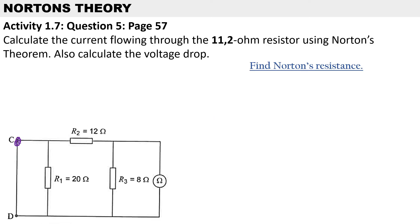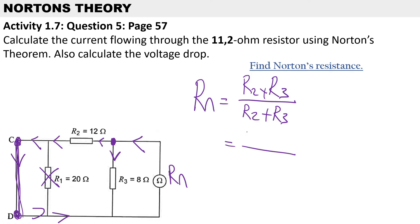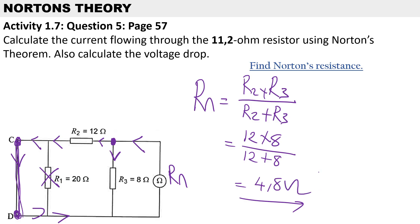The next step is to find Norton's resistance. In this step we always short circuit the battery. The current will split up at the parallel branch and when it reaches R1, it will bypass R1 because it wants to go through the path of least resistance, so R1 becomes inoperative. To calculate Norton's resistance using the product-sum rule: R2 multiplied by R3 over R2 plus R3 — that's 12 times 8 over 12 plus 8 — so Norton's resistance is 4.8 ohms.